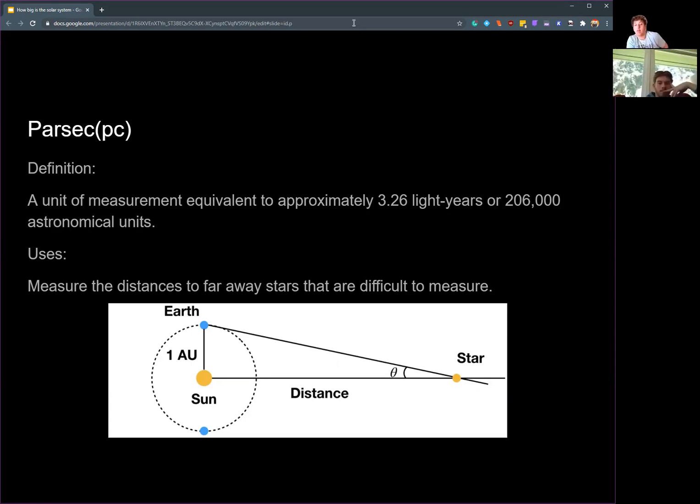And what it does is it uses the Earth and the Sun to make a right triangle. So you see, you have the angle here is 90 degrees, and you have the leg of the triangle is exactly one astronomical unit.